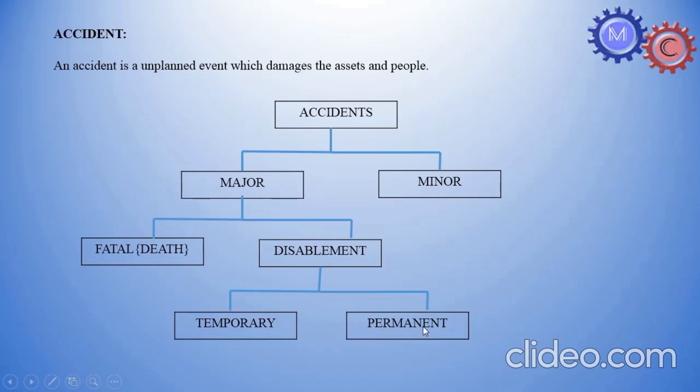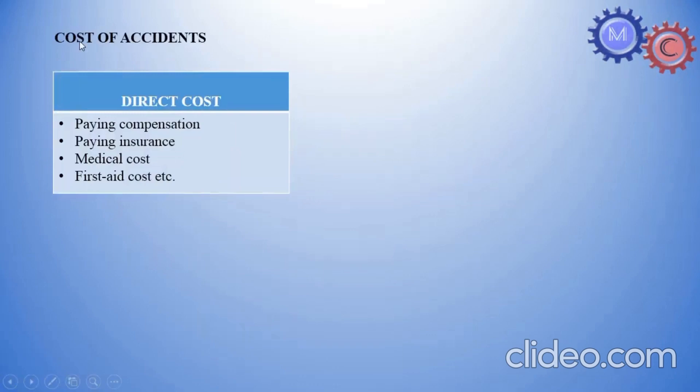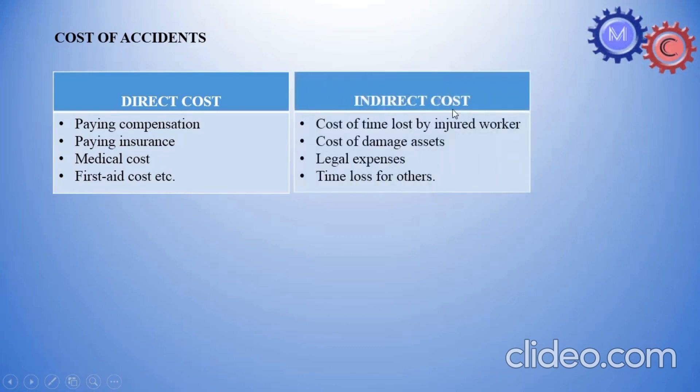Cost of accident. First direct cost: pay insurance to them, medical. Indirect cost: cost of time lost by injured worker, cost of damage assets, one machine tool cut out and replace, legal expenses, one police station, fire or cases clear, this is legal expenses, time lost for others.